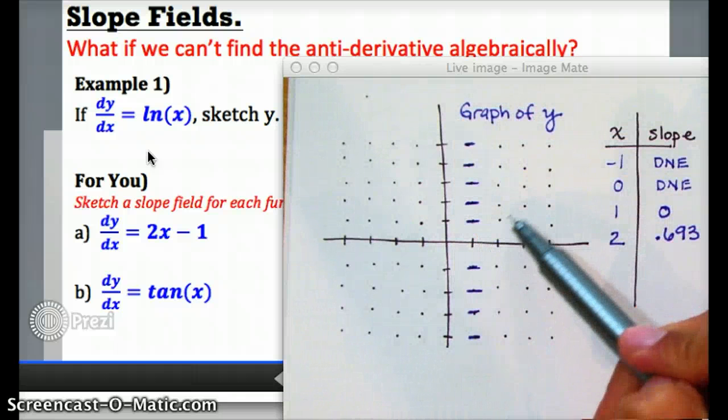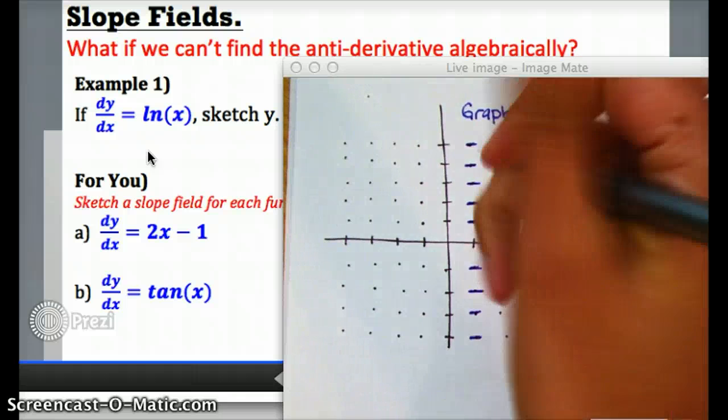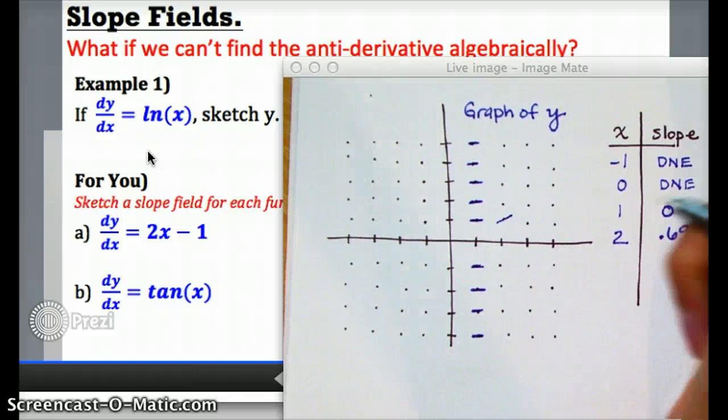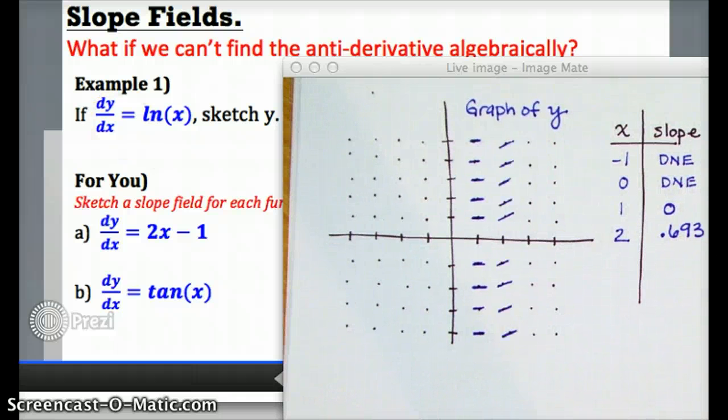So keep in mind that diagonal, perfectly diagonal, is 1, so I want something shallower than that, which means maybe something a little bit like that. And I'm going to repeat those little slope lines all the way up and down at each point, doing my best to keep each of those slopes the same direction.